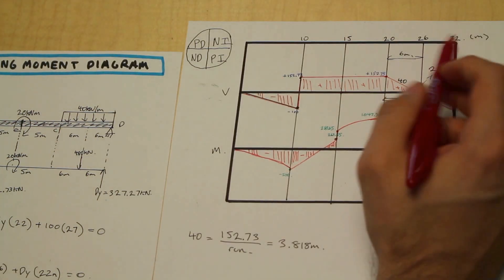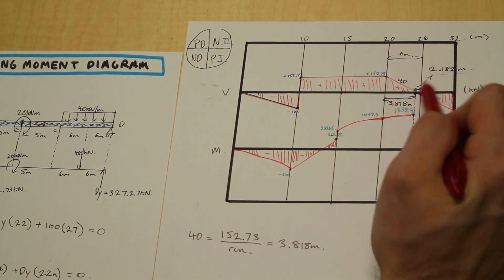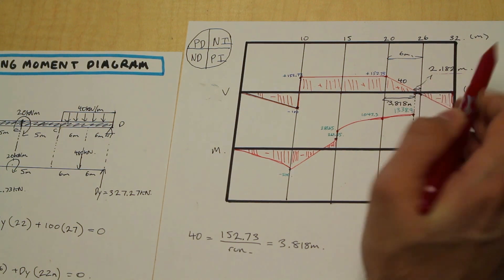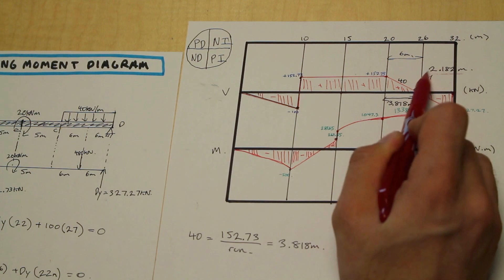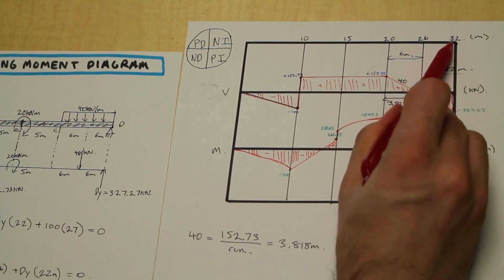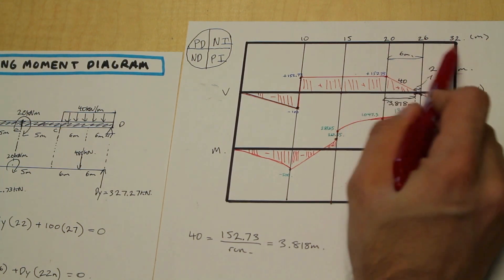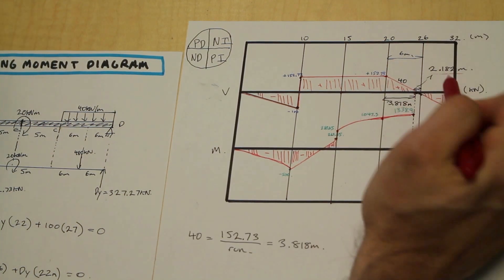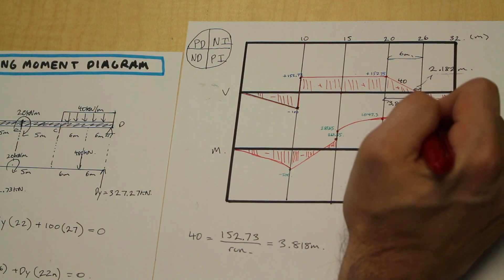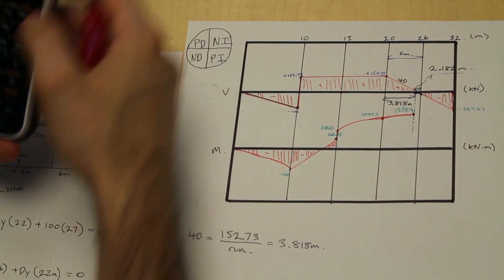And we can just solve directly for the moment using that. So what I mean by that is we have 6 meters here. 32 minus 26 is the base of this triangle plus this little distance here, which is 2.182. You can also do 32 minus 20 minus 3.818. There's a bunch of different ways to do it. I just did this to show you how to find that little distance there.